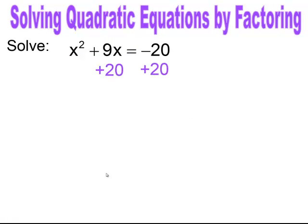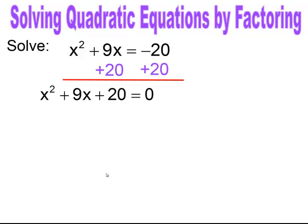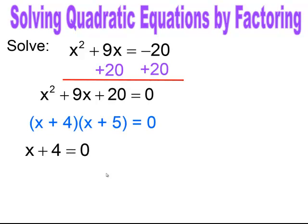First, get it into standard form by adding 20 to both sides. Then factor — you should get x plus 4 times x plus 5. Set each factor equal to zero and solve. The solutions are x equals negative 4 and x equals negative 5.